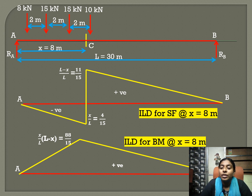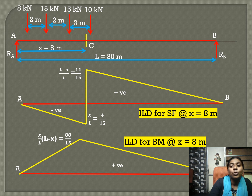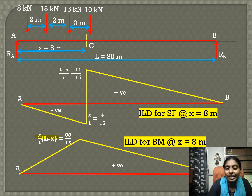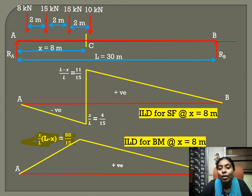Now the influence line diagram for bending moment at X = 8 meters. For bending moment, we have only the positive ordinate, obtained by the relation X by L into (L minus X). Substituting X = 8 and L = 30, we get the ordinate for bending moment as 88 by 15.